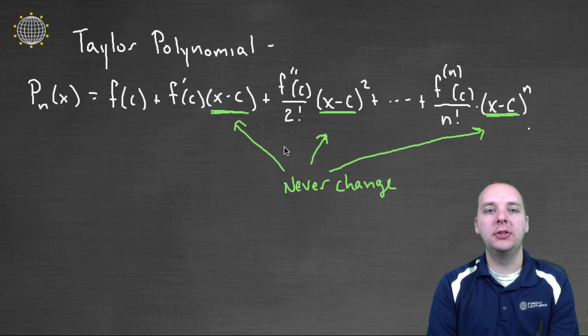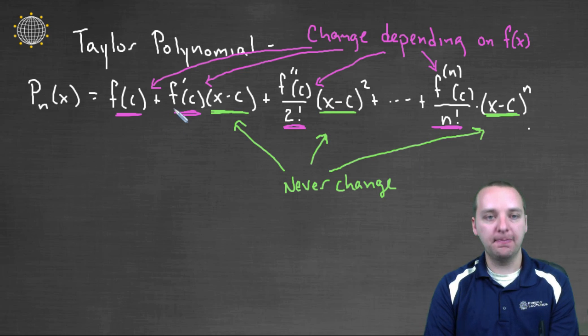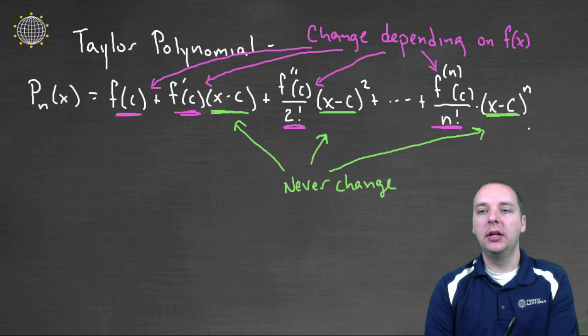And the only things that will change are the things that depend on f, that depend on the function that's chosen. But where are your f's? Well, they seem to be the coefficients of these terms. So here, if you look in pink, or purple, whatever that color is, we have f of c, f prime at c, f double prime at c, so on and so forth. These guys change depending on your function. So let's see what we can extrapolate from that.